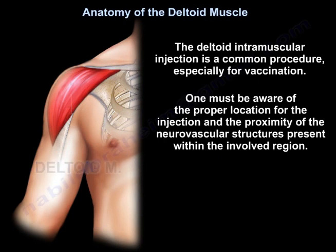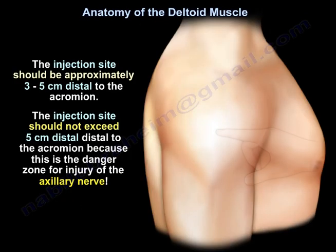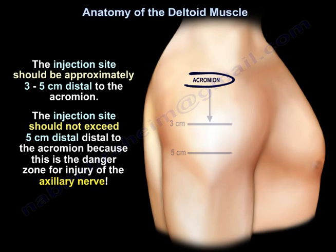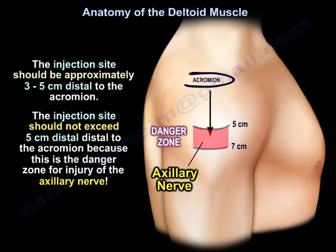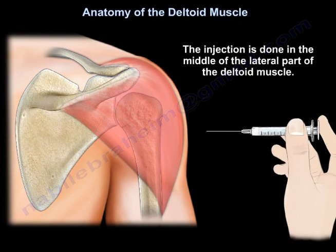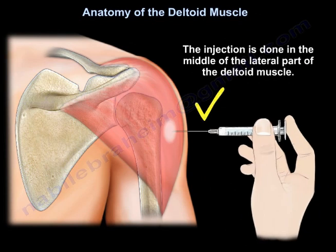A deltoid intramuscular injection is a common procedure, especially for vaccination. One must be aware of the proper location for the injection and the proximity of the neurovascular structures in the region. The injection site should be approximately 3 to 5 cm distal to the acromion. It should not exceed 5 cm distal to the acromion, as this is the danger zone for injury of the axillary nerve. The injection is done in the middle of the lateral part of the deltoid muscle.